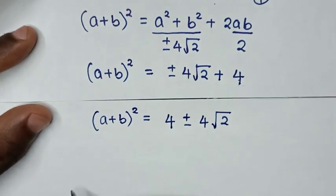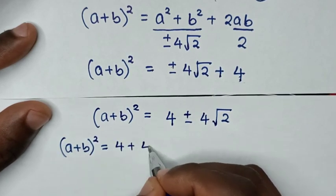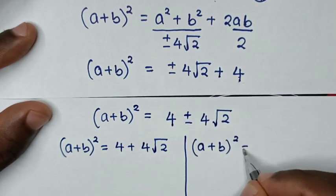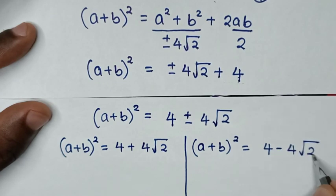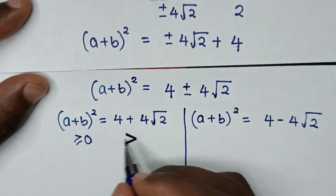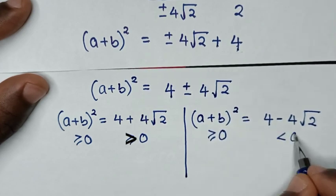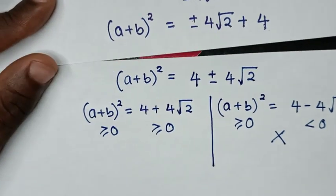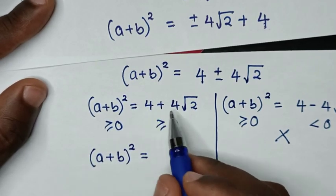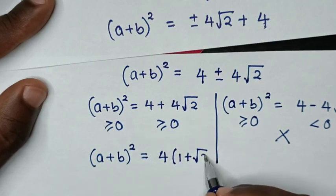From here we have two solutions. First solution: (a plus b) squared equals 4 plus 4 root 2, and the second: (a plus b) squared equals 4 minus 4 root 2. Now since (a plus b) squared must be greater than or equal to 0, the first solution is positive and greater than 0, but the second side is less than 0, so that solution is rejected. For the valid solution, 4 is a common factor, so we take it out: (a plus b) squared equals 4 times (1 plus root 2).